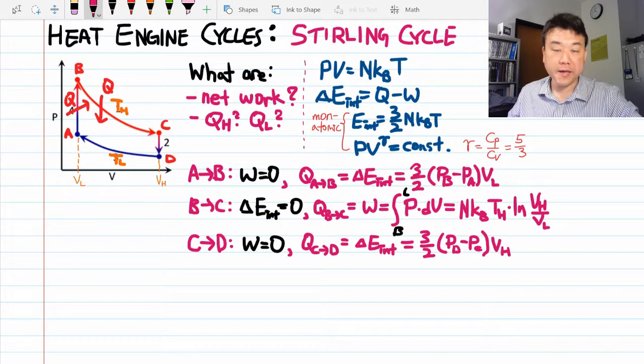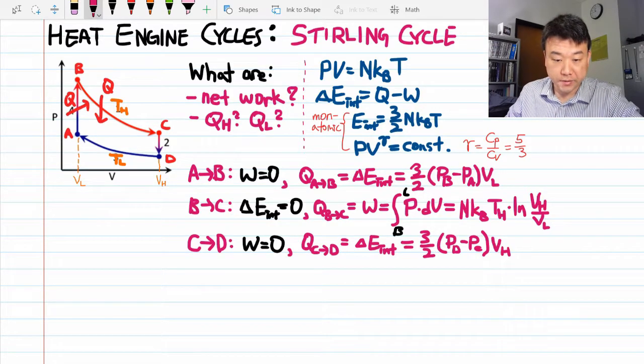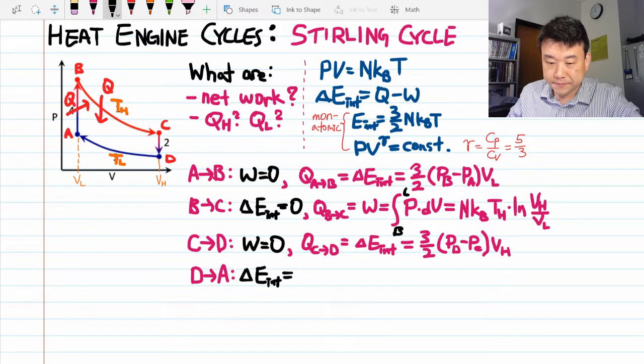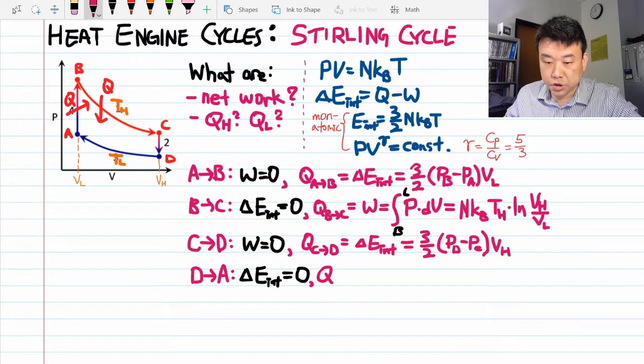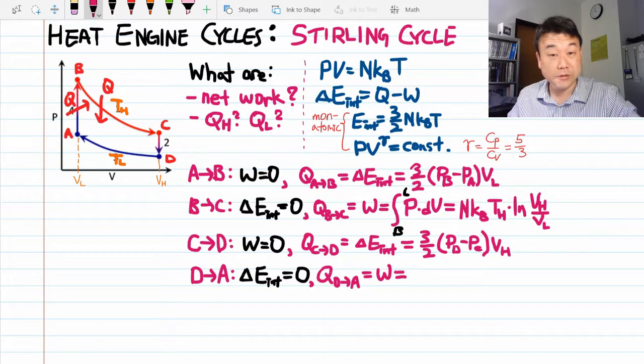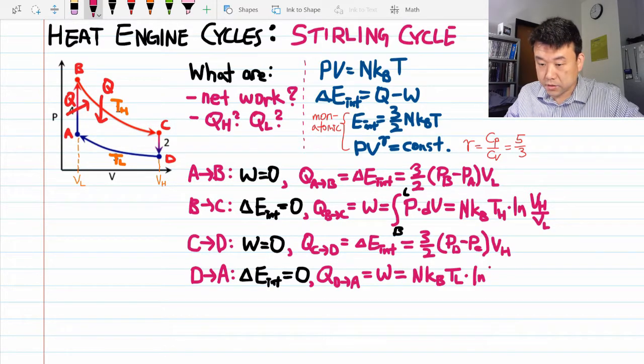Alright, the final step: the isothermal contraction D to A, completing the cycle. As before, change in the internal energy is zero. That's what isothermal means. So the heat transfer has to be equal to the work done. And I'm just going to write down the result here. Hopefully you can double check that it's correct. And check that it's negative as it's supposed to be.